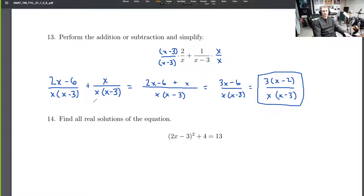Okay. All right, so the next problem, 14. Find all real solutions of the equation. Okay. This one is not so bad. It might look a little difficult from the beginning, but it's really not so bad. So (2x minus 3) squared plus 4 is 13.